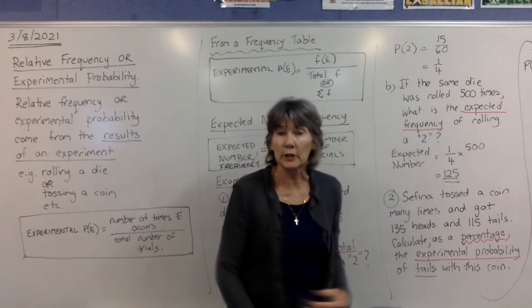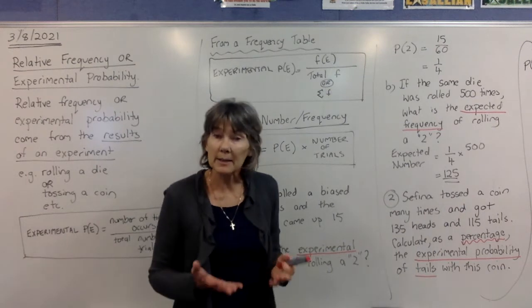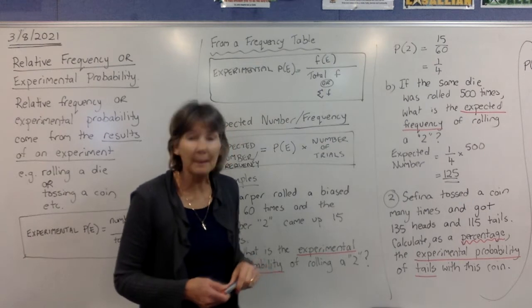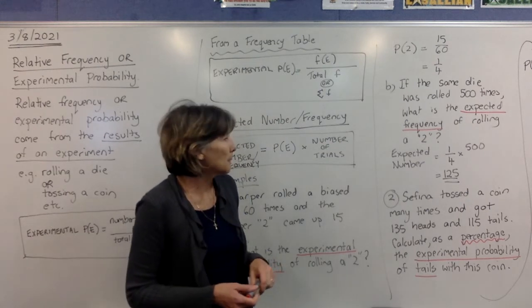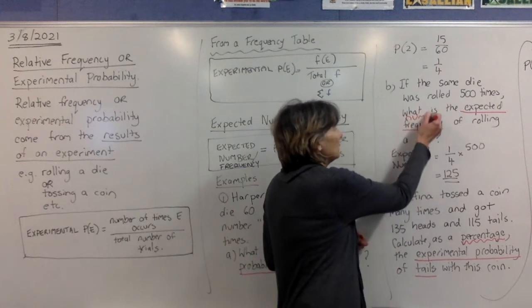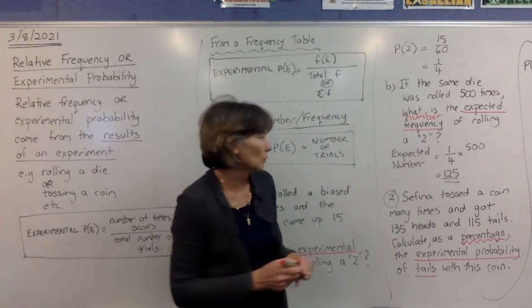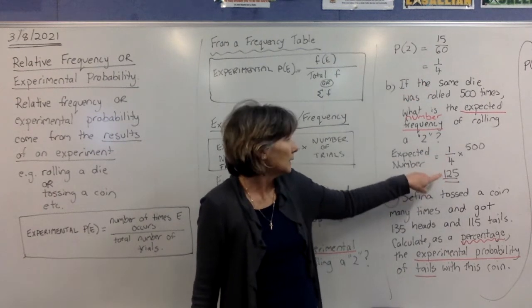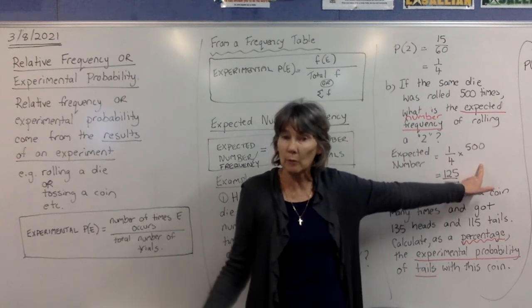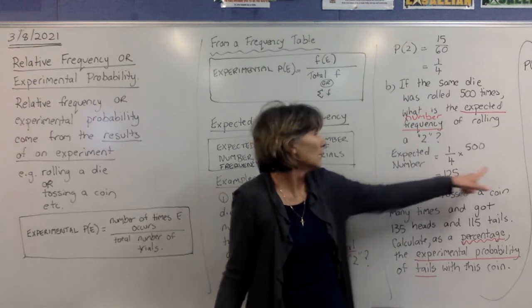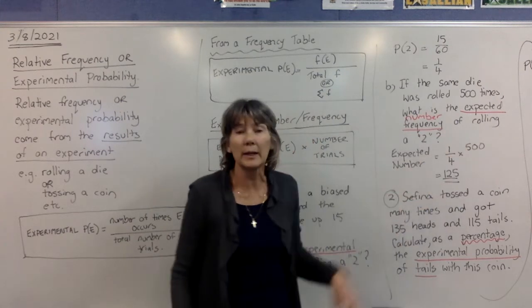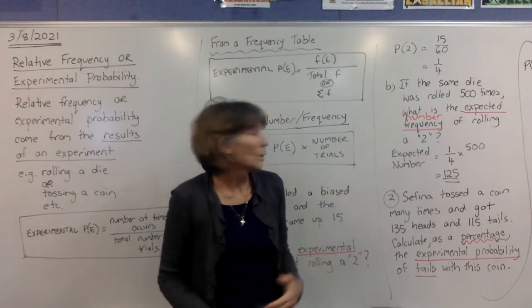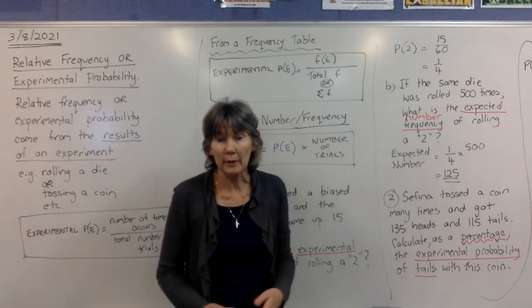Now part B of this question says, if the same die, so this same biased die, was rolled 500 times, what is the expected frequency of rolling a 2? Expected frequency or expected number of times that you would get that 2? So we get the probability of a 2, which we found out was a quarter, and times by 500 times that we would be rolling this die. Now if you work that out on your calculator, you get 125. So that means we would expect to get number 2 125 times out of those 500 rolls.